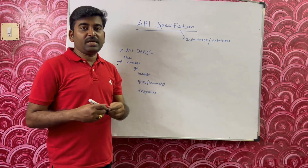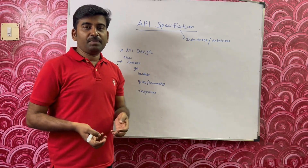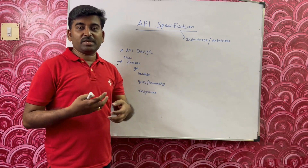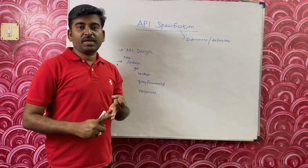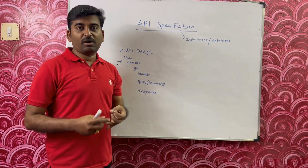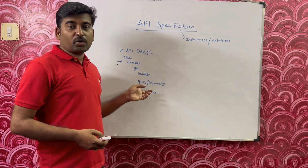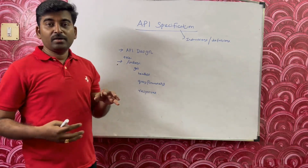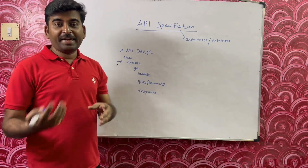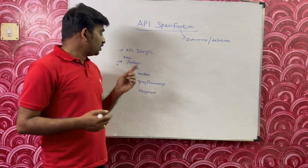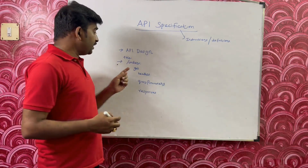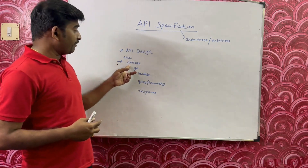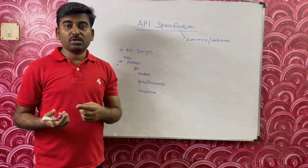Basically, when somebody is calling our API, what parameters they need to pass — if it is a GET method, what is the endpoint they need to call, what method they need to use, or if they need to pass some headers or query parameters. Those kinds of information we need to document with the proper syntax. For example, your API title and description will go in the title, and similarly if you have a resource endpoint — for example, 'orders' as a resource or endpoint.